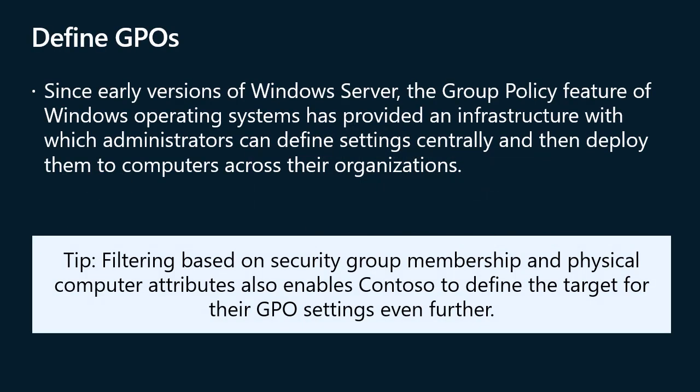Since early versions of Windows Server, the group policy feature of Windows Operating Systems has provided an infrastructure with which administrators can define settings centrally and then deploy them to computers across their organizations. Group policy is a framework in Windows Operating Systems with components that reside in Active Directory Domain Services (ADDS), on domain controllers, and on each Windows Server and client. By using these components, you can manage configuration in an ADDS domain.